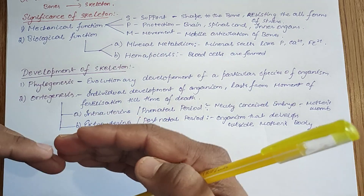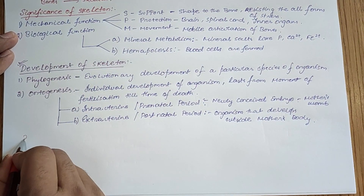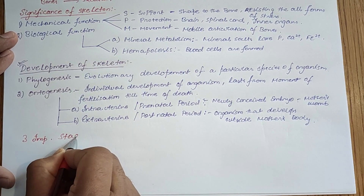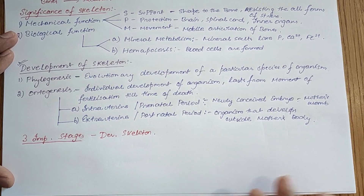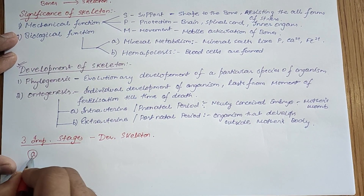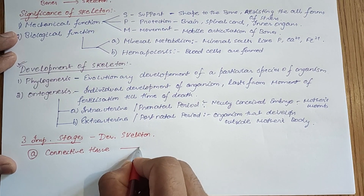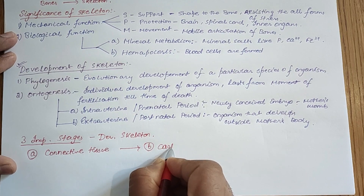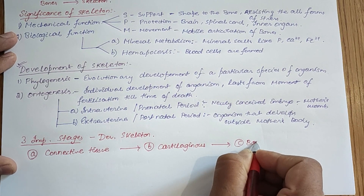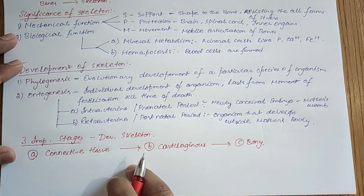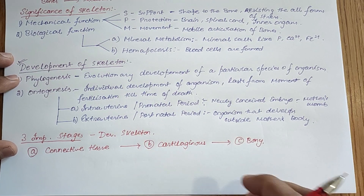From these two phases, the process of development of the skeleton starts from a simpler to a more complex form due to the process of adaptation. The actual development of the skeleton takes place in three important stages: first is the connective tissue stage, second is the cartilaginous stage, and third is the final bone stage. These three stages contribute to the formation and accumulation of bone, forming the total skeleton of our body.